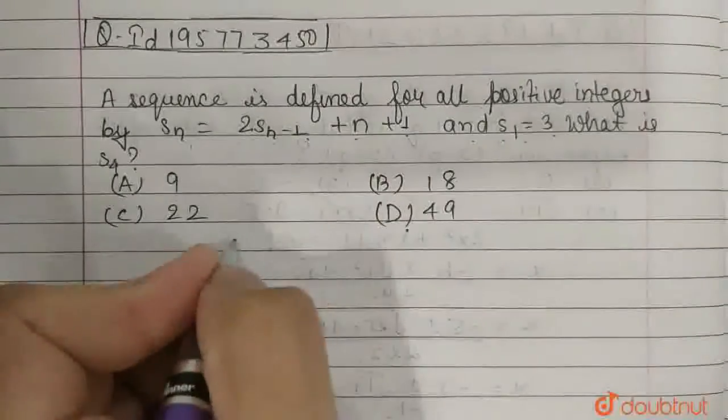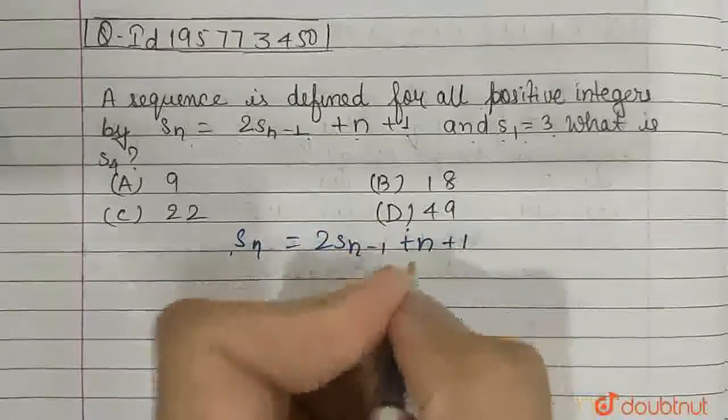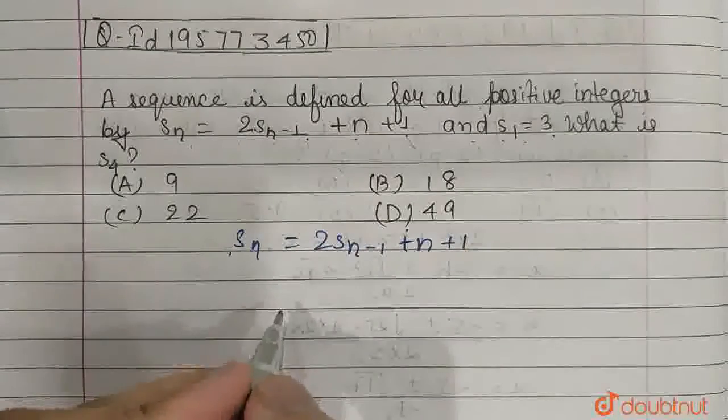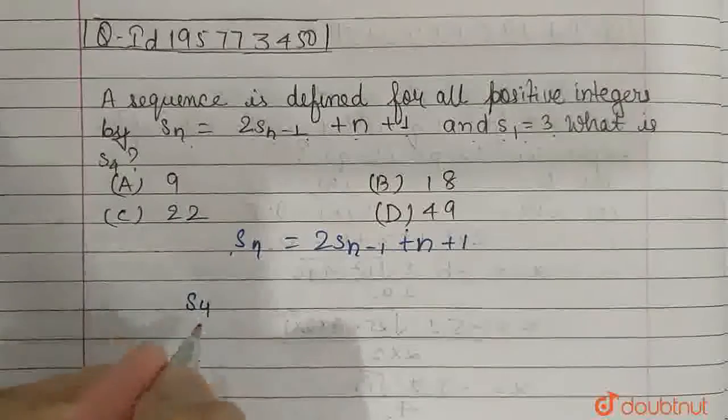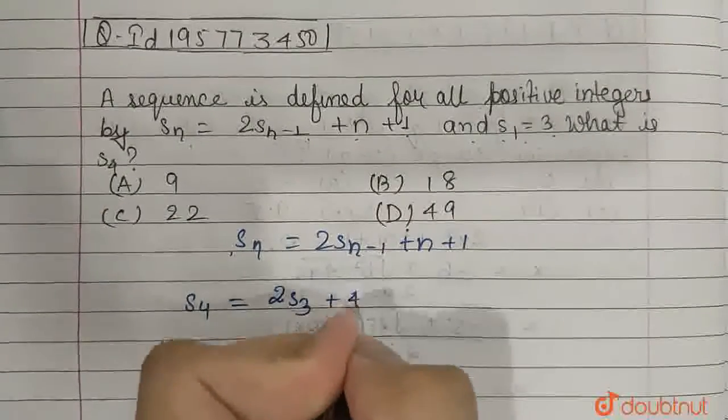So sn is given as 2 times sn-1 plus n plus 1. Now we have to calculate what is s4. So s4 will be equal to 2 times s3 plus 4 plus 1.